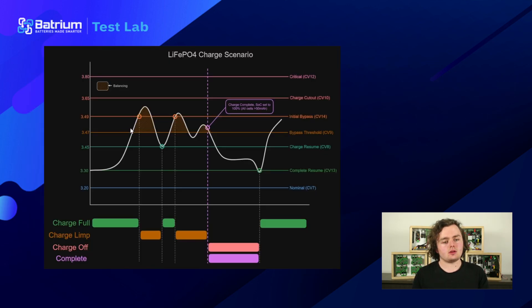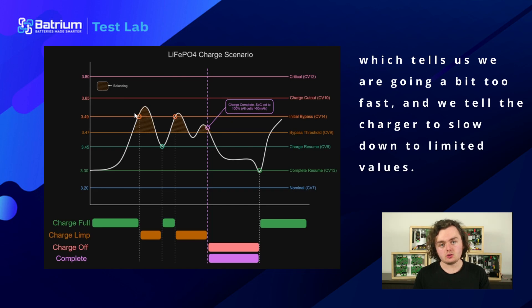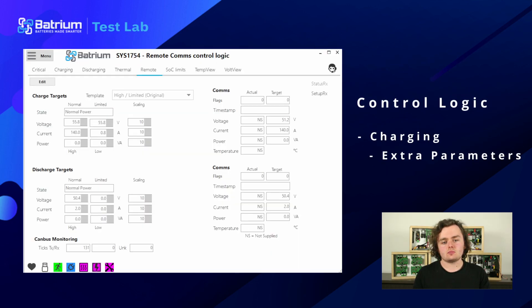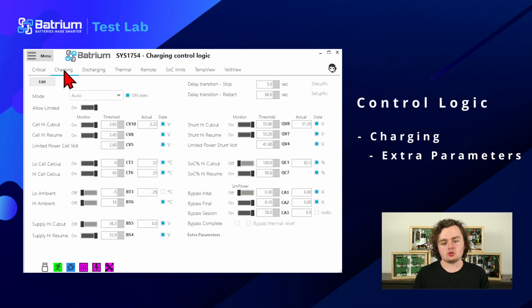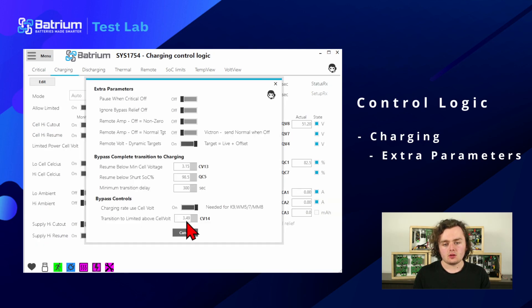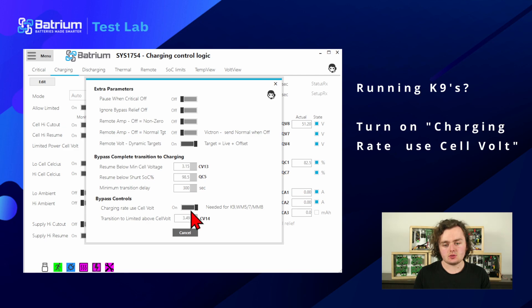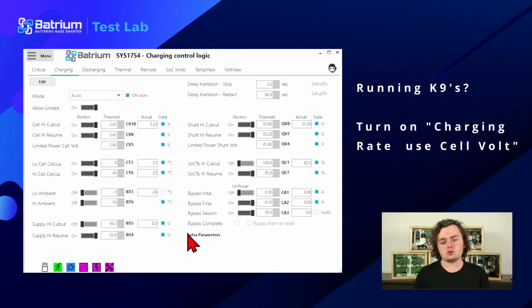We've hit that but the inverter is still charging and pushing the voltage up. So we hit the second threshold — initial bypass — which tells us we're going a little bit too fast and we need to tell the charger to slow down to limited values. You can find that in control logic, charging, and extra. If you're running K9s you have to turn this switch on and set this to a value maybe 20 millivolts above your bypass threshold — so 3.47 brings us up to 3.49 as a good value.